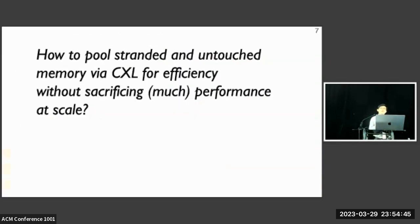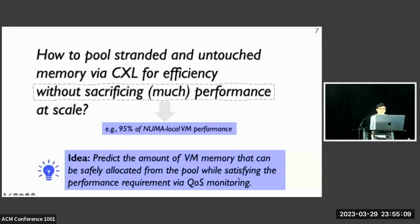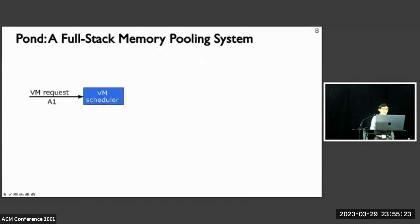Given this, the research question we want to answer is how can we pool stranded and untouched memory via CXL for cost efficiency without sacrificing much of the performance of the VMs at scale. Say, we can try to control the performance overhead within 5% of the NUMA local VM settings. The idea behind Pond is to predict the amount of VM memory that we can safely allocate from the memory pool while trying to satisfy the performance requirements via QoS monitoring.